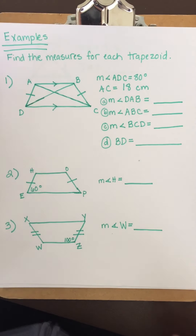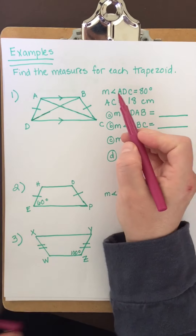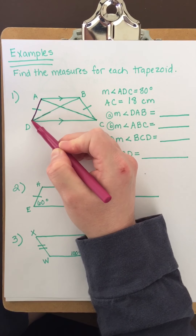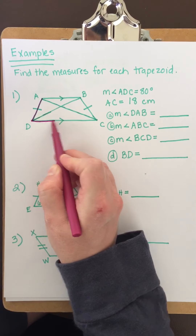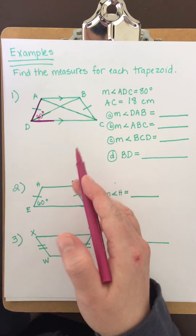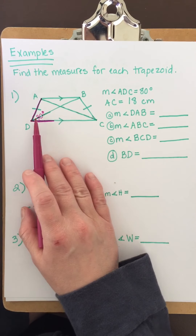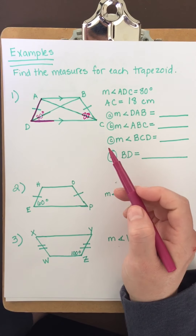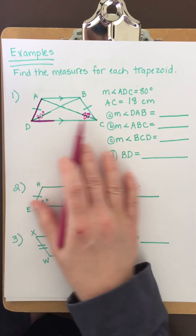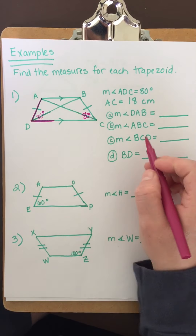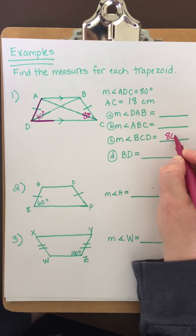Let's look at the first example: find the measures for each trapezoid. It tells me the measure of angle ADC is 80 degrees — that's this whole big angle right here. Remember, base angles are congruent, so if this angle is 80 degrees, then angle BCD is also 80 degrees because they're attached to the same base.